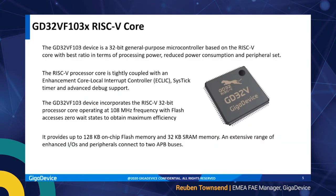The GD32BF103 is a 32-bit RISC-V ISA and supports system frequencies of up to 108 megahertz. In terms of memory, it supports up to 128 kilobytes of flash and 32 kilobytes of SRAM. As a microcontroller it includes additional peripherals including standard serial connectivities and support for analog in terms of ADCs and DACs. The interrupt controller has also been enhanced to reduce latencies.